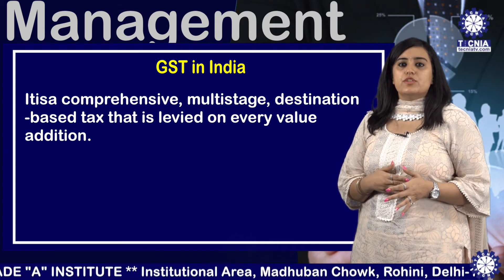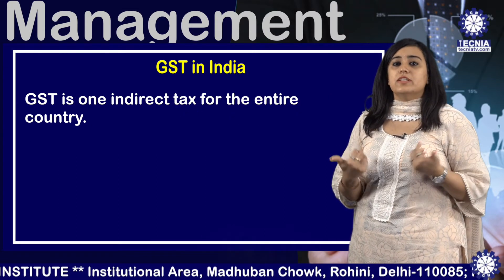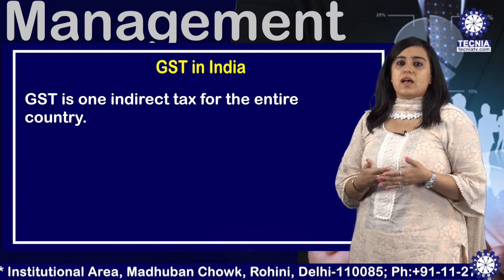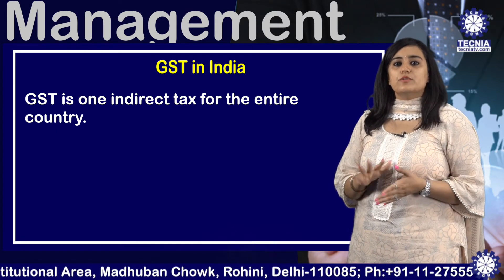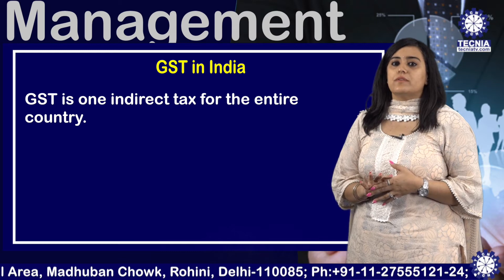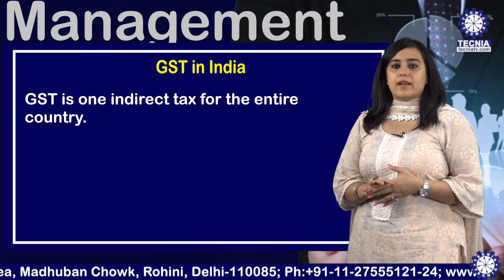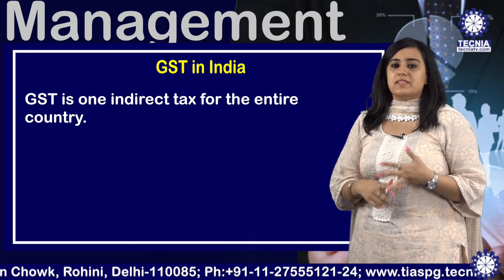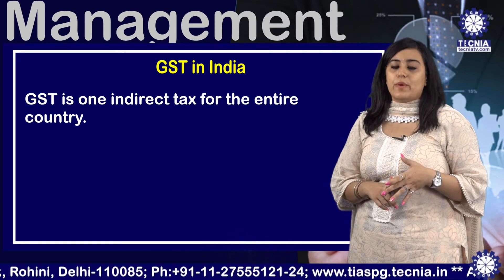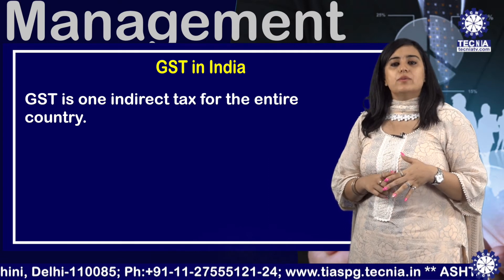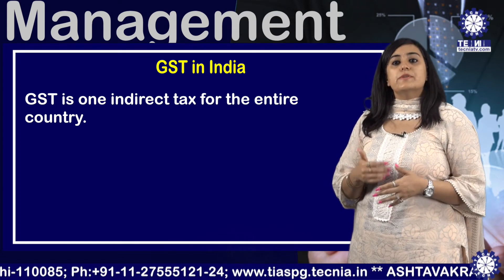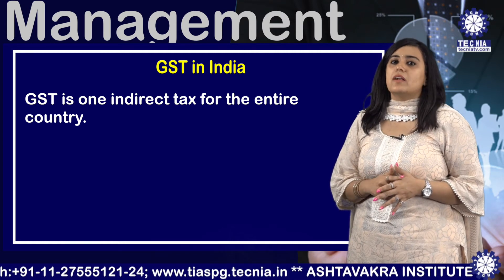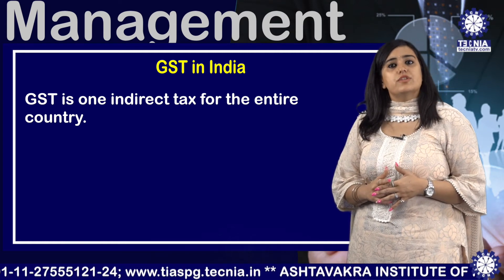In other words, GST is one indirect tax for the entire country. Goods and services are divided into 5 tax slabs for collection of the tax: 0%, 5%, 12%, 18%, and 28%. However, petroleum products, alcohol drinks, and electricity are not taxed under GST.